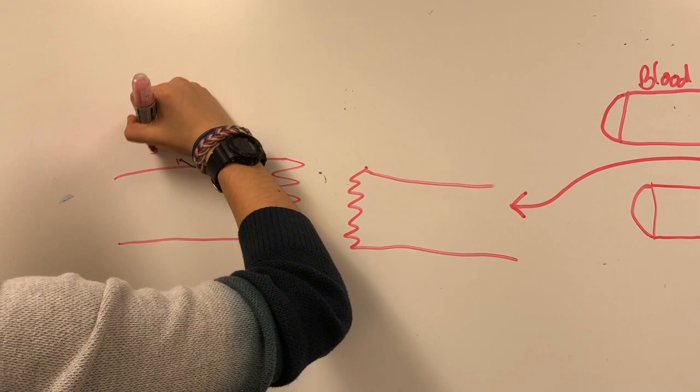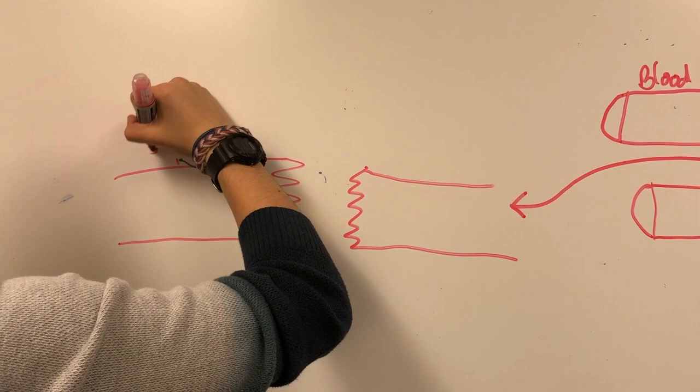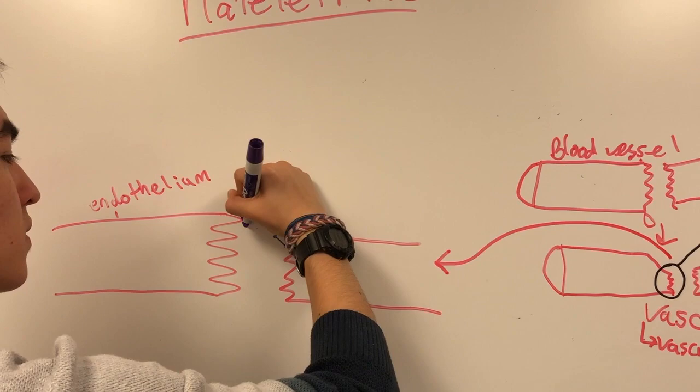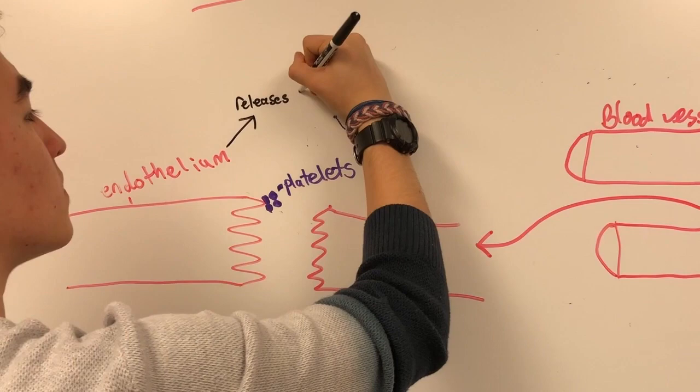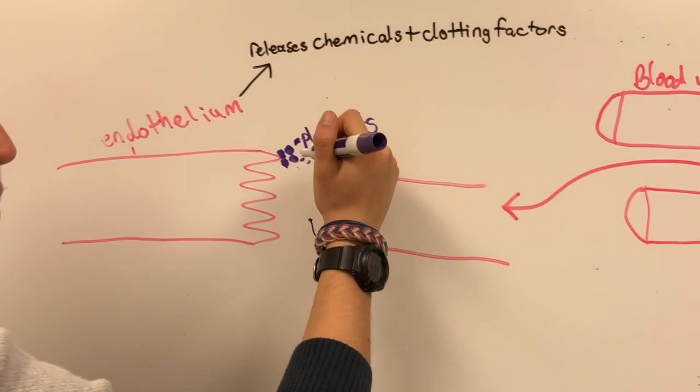Next we have the platelet phase. Here you can see some platelets will attach to the endothelial surface of the injured vessel. This is called platelet adhesion. The now activated platelets release chemical compounds such as ADP, calcium, and thromboxane A2, as well as clotting factors.